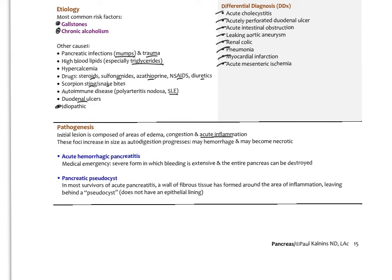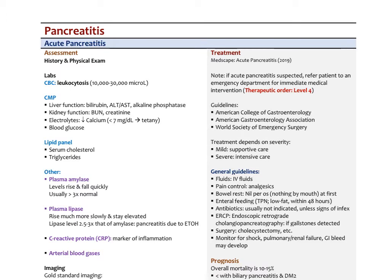The initial lesion is a focus of acute inflammation with congestion; these foci increase in size as digestive enzymes activate and begin to autodigest the pancreas, which can become hemorrhagic and then necrotic. The acute hemorrhagic phase is a medical emergency due to risk of severe bleeding and vascular collapse. After an episode, a wall of fibrous tissue can form around the area of inflammation, creating a pseudocyst — lined by collagen rather than epithelium — indicating the insult has been contained.